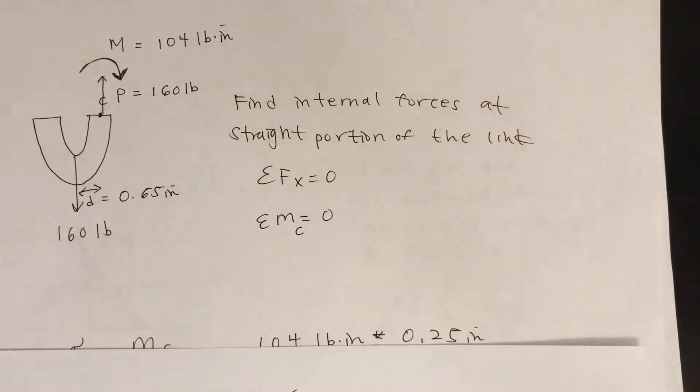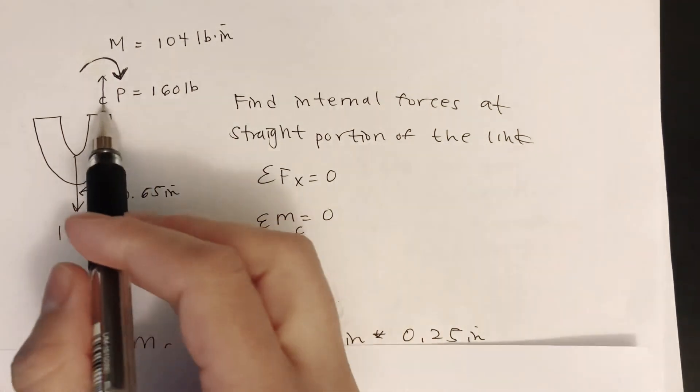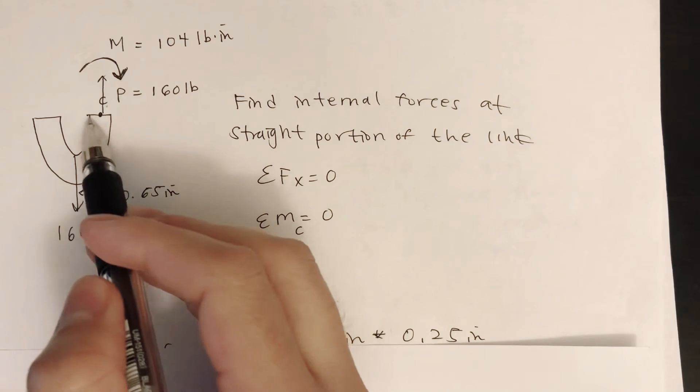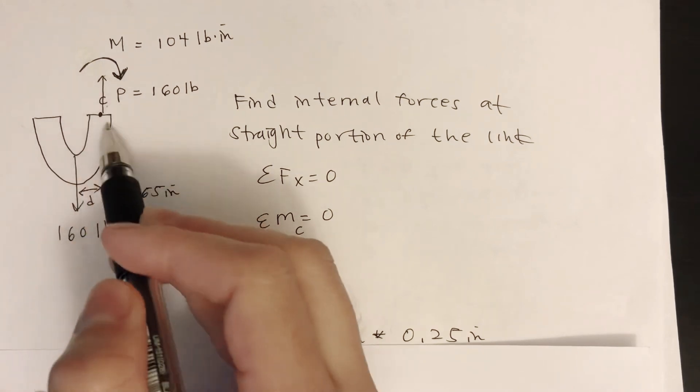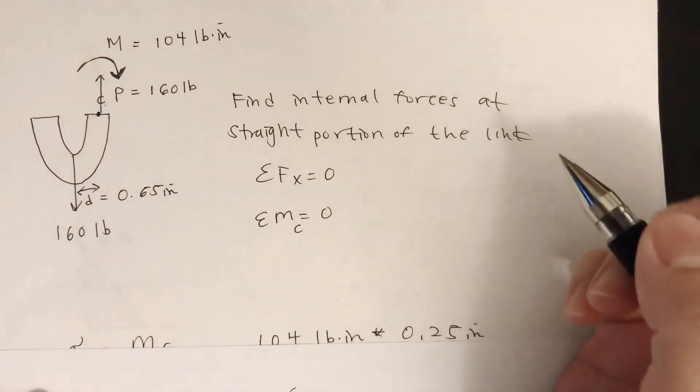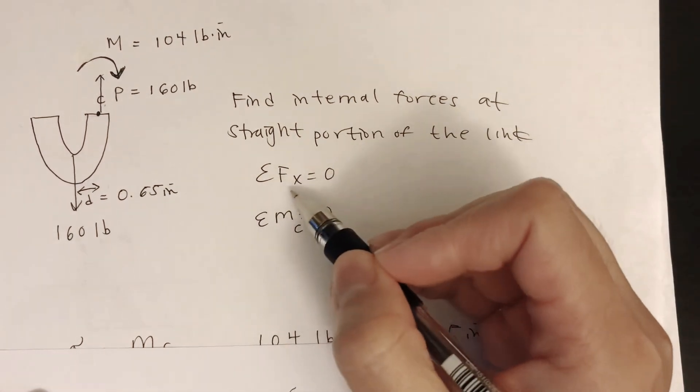First we want to find the internal force and the internal moment at the section that we want. So we take the sum of the forces in the x direction.